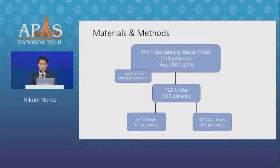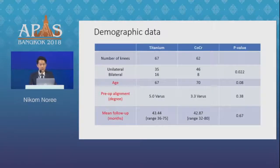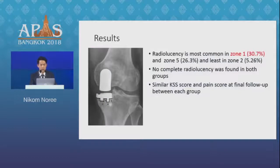124 fixed-bearing medial UKA cases were included in our study from 2011 to 2016. Finally, 67 knees were in the titanium tray group and 62 knees were in the cobalt chromium tray group. We found that the hip-knee-ankle alignment and mean follow-up did not differ significantly, but there were more unilateral than bilateral UKA cases in our study.